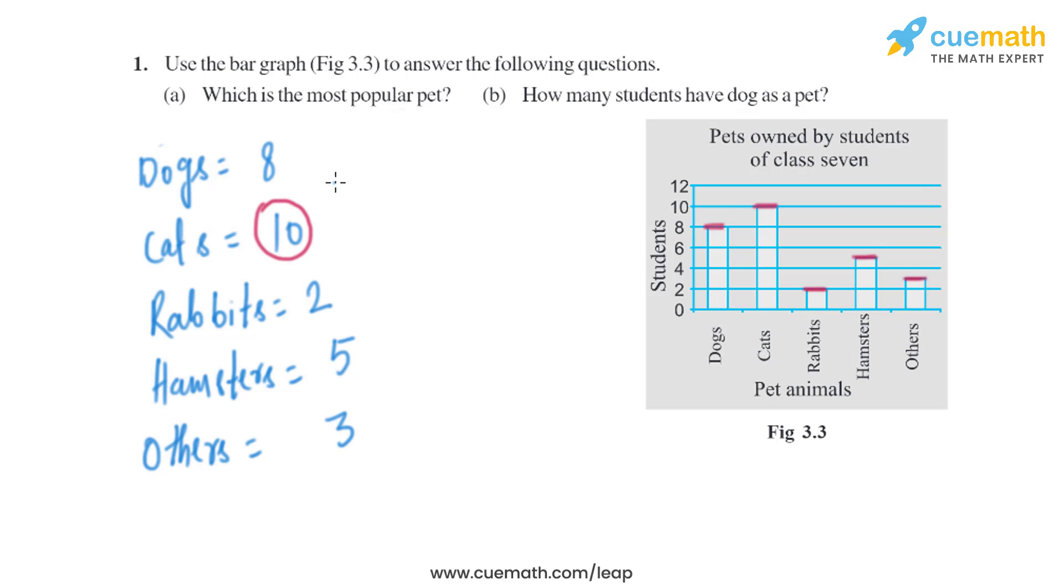In the next part of the question it says how many students have dog as a pet. As we can see, there are 8 students who have dog as a pet.